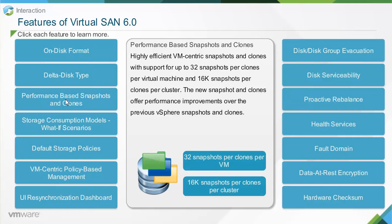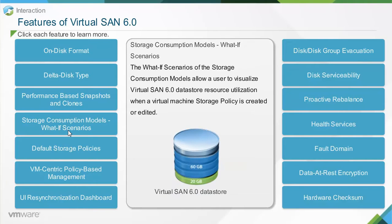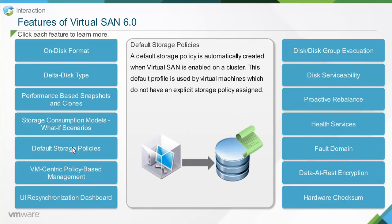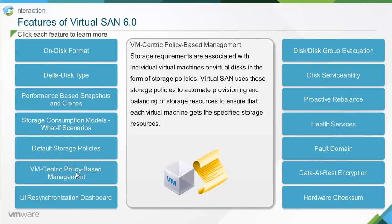The new snapshots and clones offer performance improvements over previous vSphere snapshots and clones. The what-if scenarios of the storage consumption models allow a user to visualize Virtual SAN 6.0 data store resource utilization when a virtual machine storage policy is created or edited. A default storage policy is automatically created when Virtual SAN is enabled on a cluster, and this default profile is used by virtual machines that do not have an explicit storage policy assigned. Virtual SAN uses these storage policies to automate provisioning and balancing of storage resources to ensure that each virtual machine gets the specified storage resources.